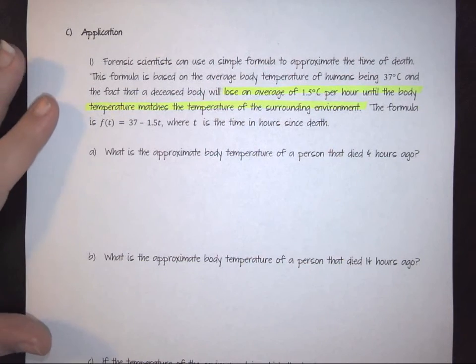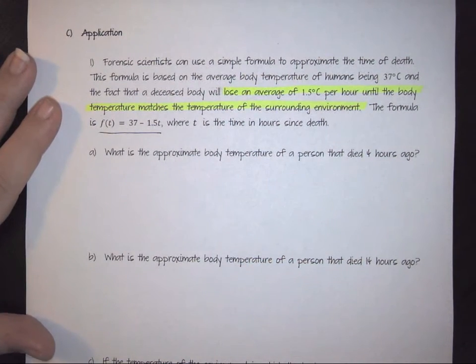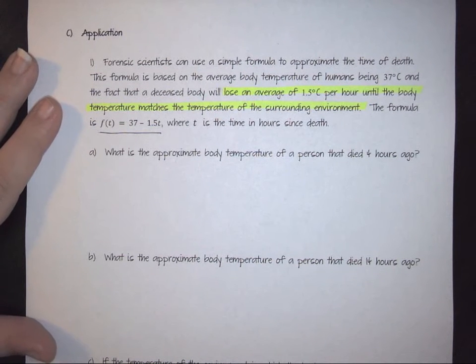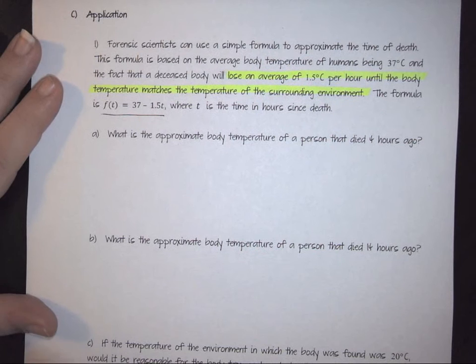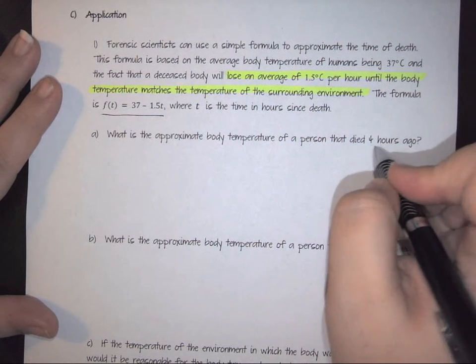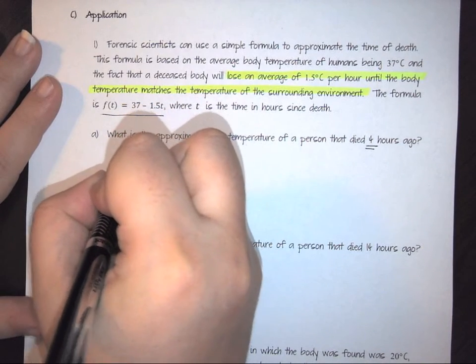So the formula that we're going to use is this following: f(t) = 37 - 1.5t, where t is the number of hours since death. So the first one says what is the approximate body temperature of a person that died four hours ago?